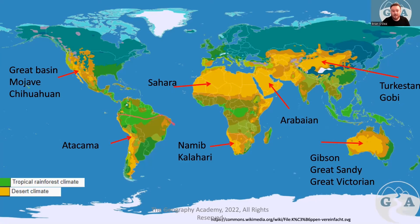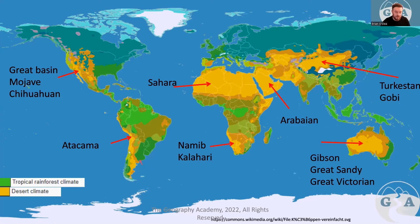We can see similar traits across these climates — there are similar lines of latitude going across the Earth. At the equator we see tropical rainforests, and deserts appear at similar distances from the equator. Some are a little further north or south than we might expect, and there are specific reasons for those differences.